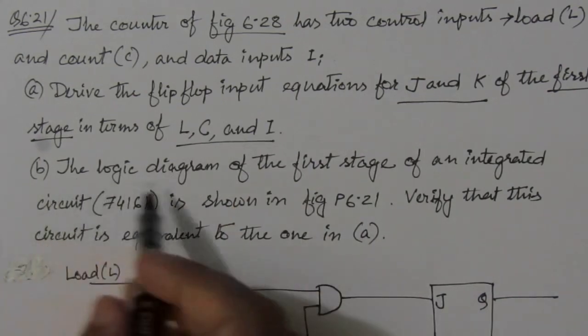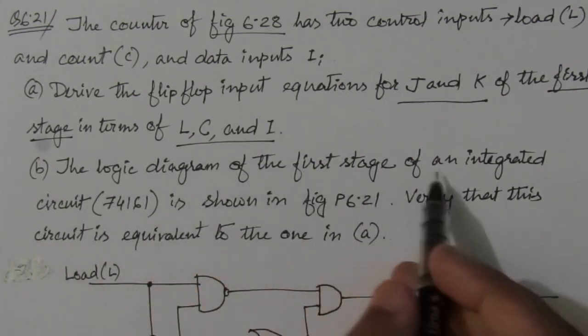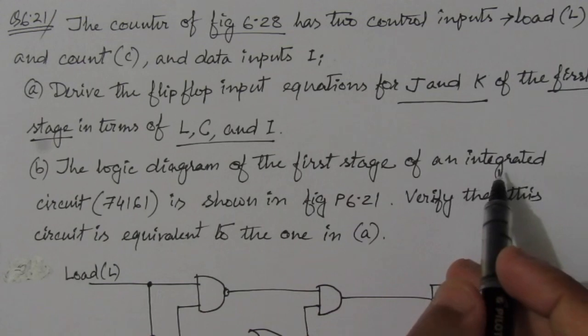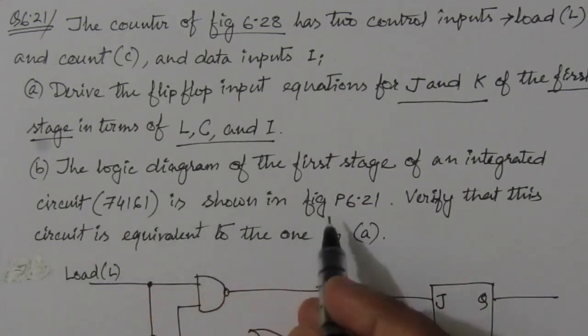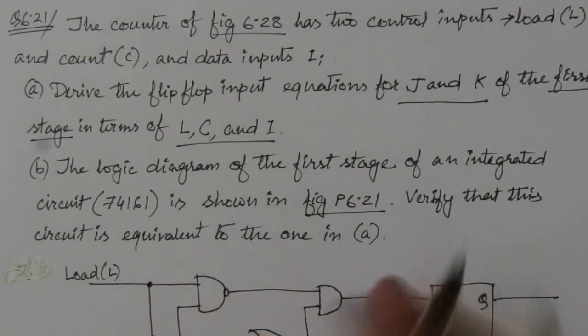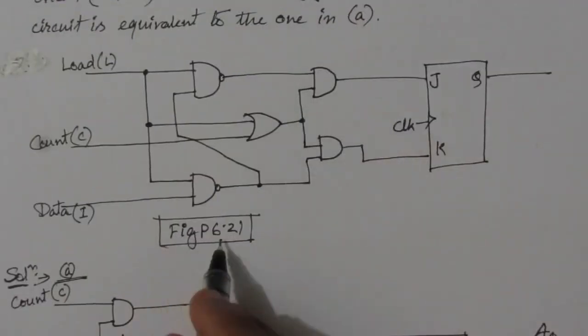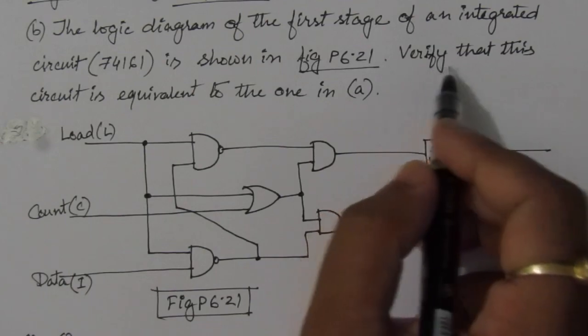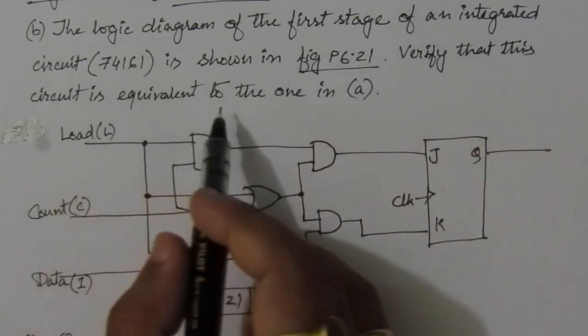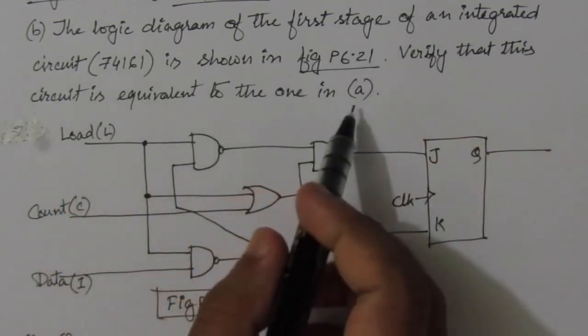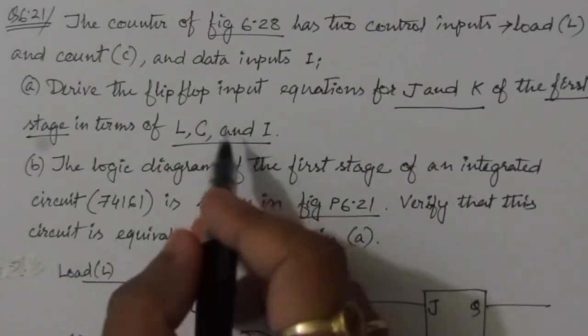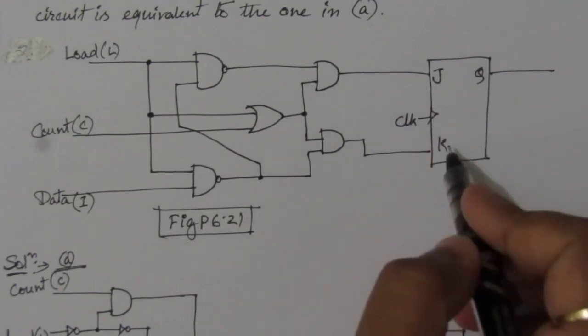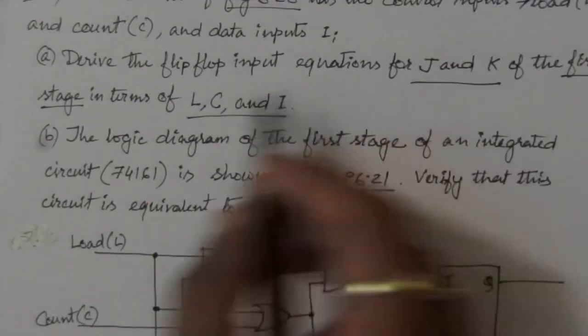In the second part of the problem, the logic diagram of the first stage of integrated circuit 74161 is shown in figure P6.21. We have to verify that this circuit is equivalent to the one in part A — that is, we must show that the J and K expressions derived from this diagram match the expressions from the first part.